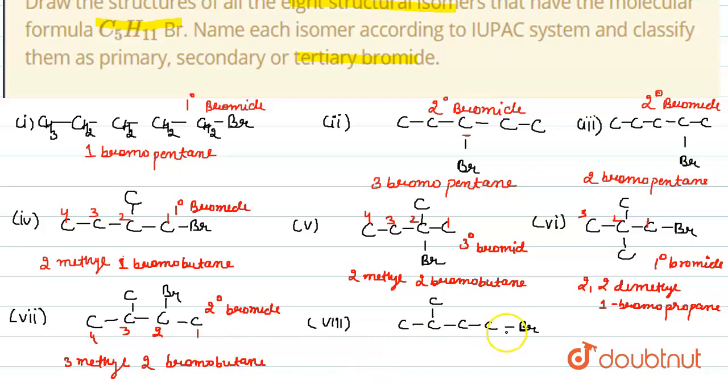And in case of the last one, this bromine is primary bromide and its name is 1-bromo-3-methyl-butane.